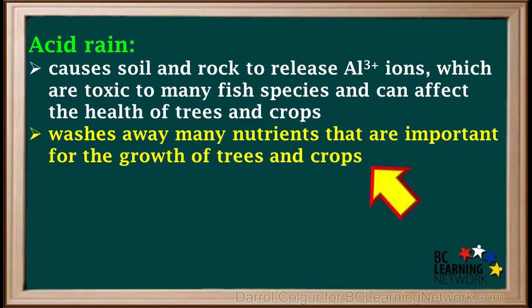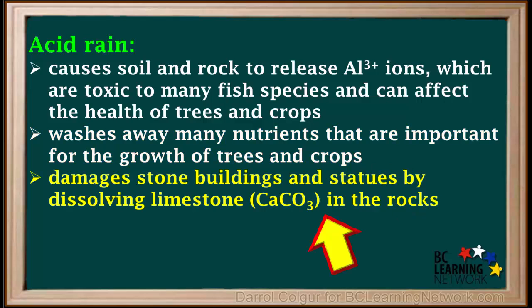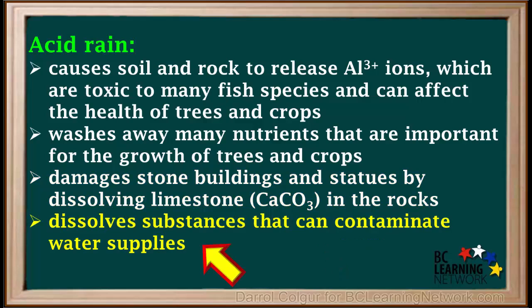When trees are weakened by acid rain, they are more susceptible to disease. Acid rain dissolves certain rocks, such as limestone or marble, which are made up of calcium carbonate. Many buildings and statues have been damaged by years of exposure to acid rain. Acid rain can also dissolve toxic metals present in rocks and soils. The resulting ions of these metals can then enter water supplies and contaminate them.